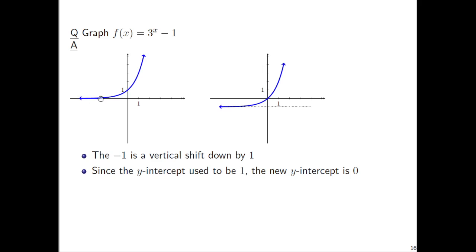The horizontal asymptote used to be the x-axis, in other words the line y equals 0. So now it makes sense shifting that asymptote down one unit. The horizontal asymptote is the line y equals negative 1.